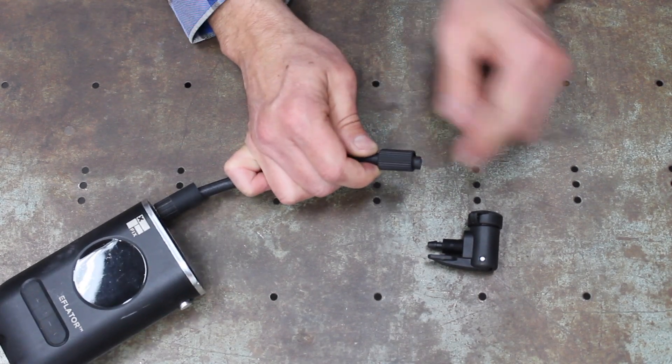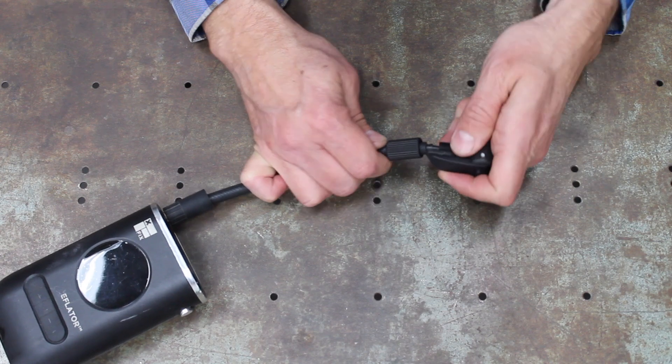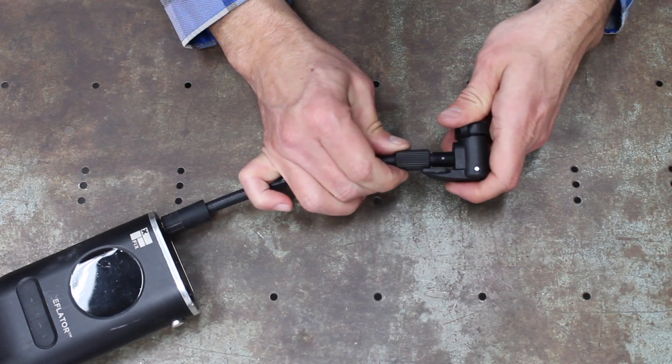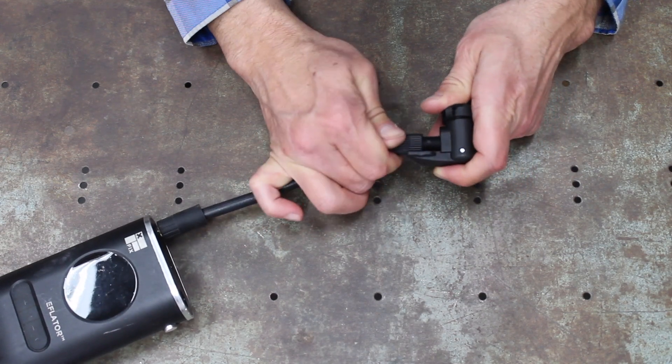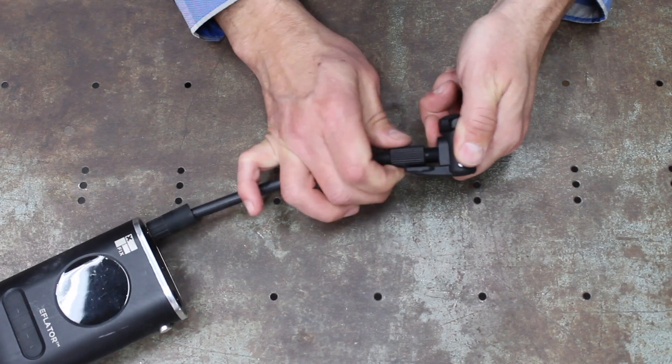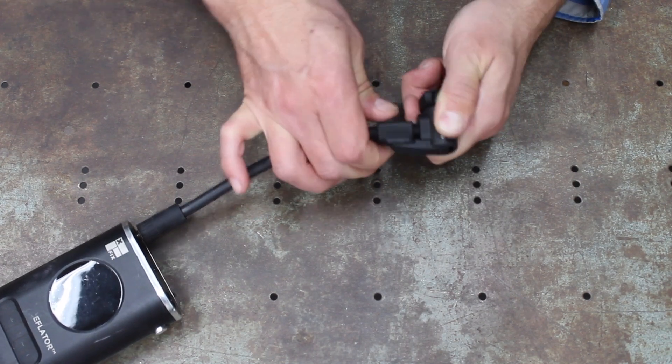Once you have your hose sticking out there, you can simply push that right up into there. Then we'll come back up with this shroud and screw that on. Once it starts to tighten, give it about another half to full turn.